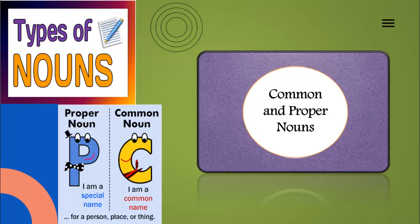Have you ever noticed that there are nouns all around you? Suppose if you look around your living room, what can you see there? A lamp, chair, couch, TV, etc.